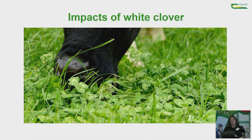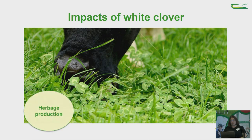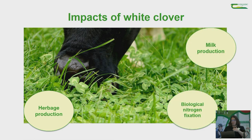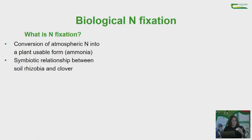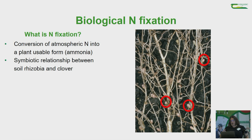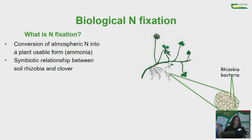The main impacts of white clover in dairy production systems are around herbage production, milk production, and biological nitrogen fixation. Biological nitrogen fixation is the conversion of atmospheric nitrogen — the nitrogen in the air we're breathing — into a form the plant can use to grow. This occurs through a symbiotic relationship between the soil rhizobia and the clover. On the roots of a clover plant you can see nodules — little growths where a colony of bacteria resides inside, having infected the root hairs.